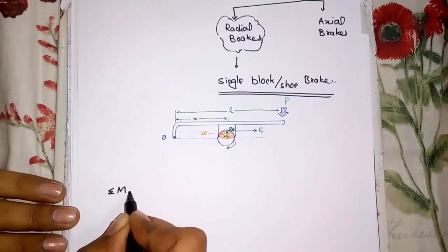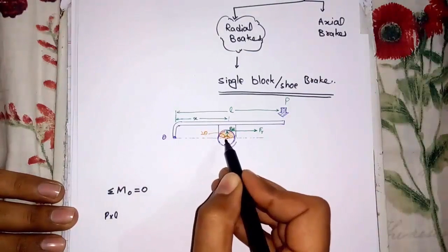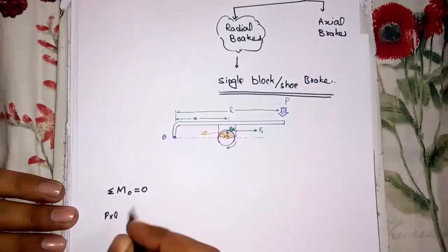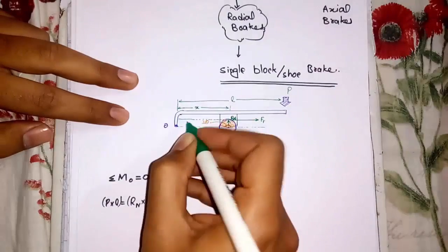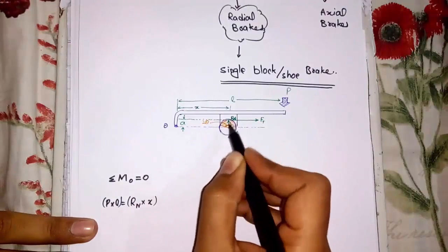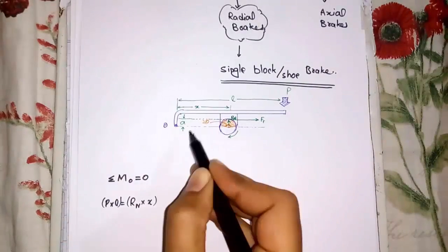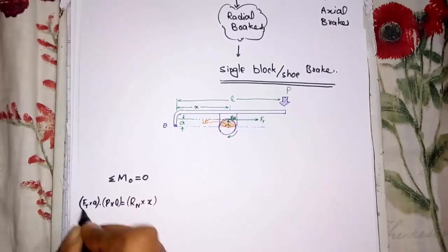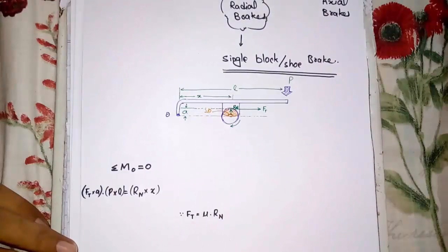To find the braking torque, take the moment about point O. P into L is in the clockwise direction, and Rn into x is in the counter-clockwise direction. Let's say the perpendicular distance between point O and the FT force is A. FT into A moment is in the clockwise direction. FT is the resistive force, so it is equal to the coefficient of friction multiplied by Rn, the normal reaction force.